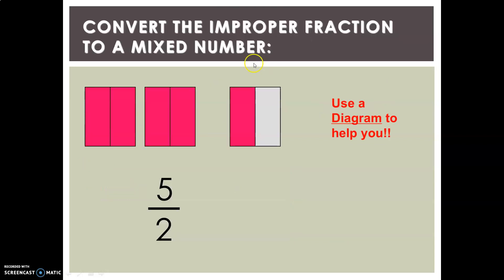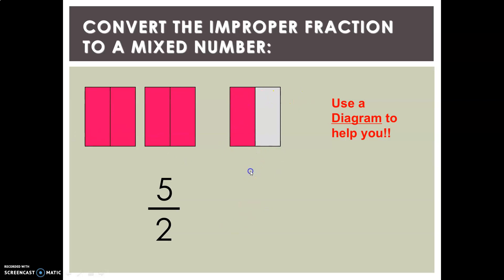Convert the improper fraction to a mixed number. Again, use the diagram to help you. Five upon two is the question — write it as a mixed number. Two parts make a whole, so the first shape is one whole, and the second shape has one part shaded out of two — so the answer is two and one upon two.